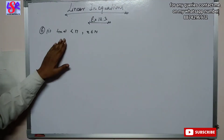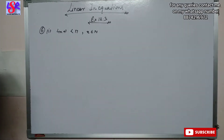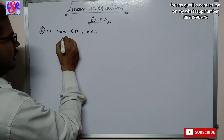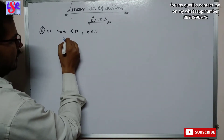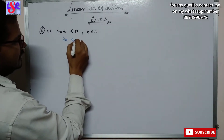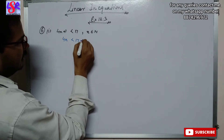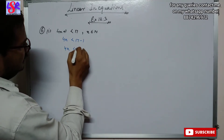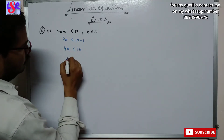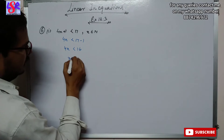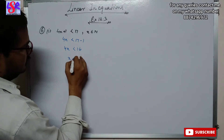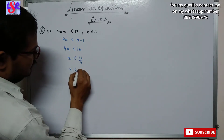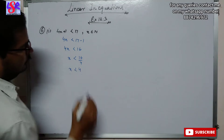In this question we have to solve this inequation. We transpose here and this will become 4x less than 17 minus 1, that is 4x less than 16. So this will be 16 upon 4, that is x is less than 4.